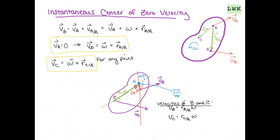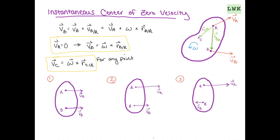Let's look at a couple of examples. In example one, we draw our perpendicular line for VA in red and a perpendicular line for VB in green. Notice how they are all on the same line. This problem is a pure translation, so there is no instantaneous center for any object moving in pure translation.